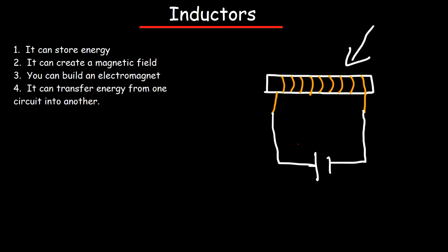Here is the positive terminal of the battery, and here is the negative terminal. The electrons will flow from the negative terminal through the inductor to the positive terminal. But conventional current is defined as the flow of positive charge, so conventional current is in the opposite direction.